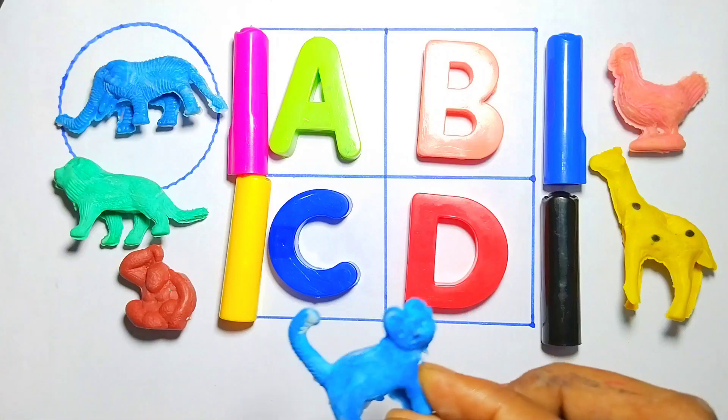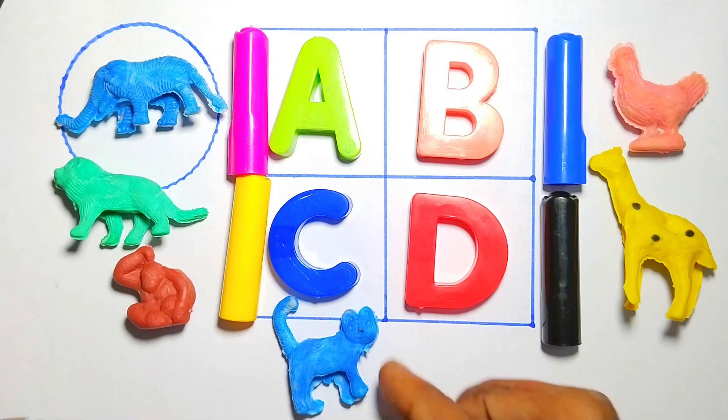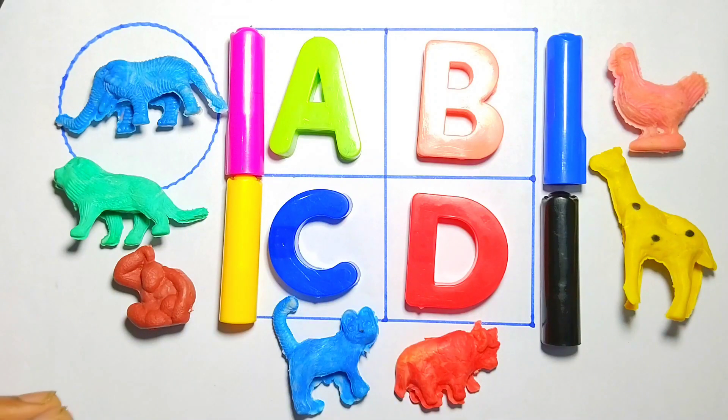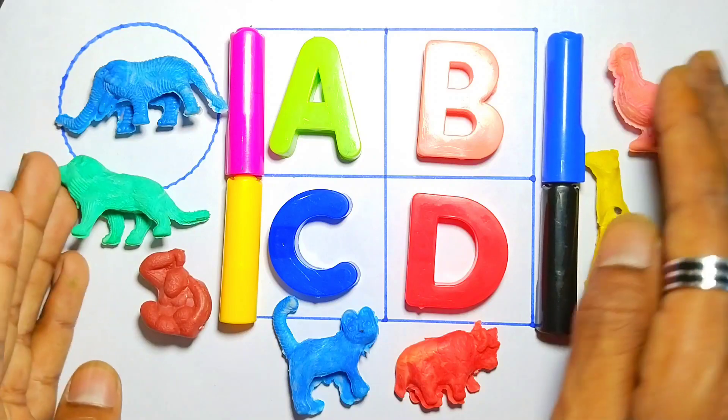Cat. C for cat. Bull. Now we are writing alphabets. Let's start video.